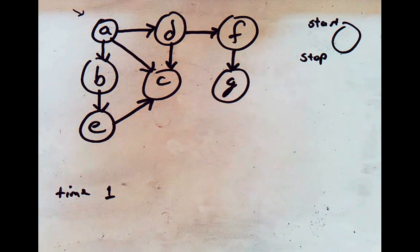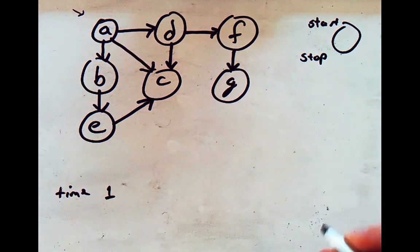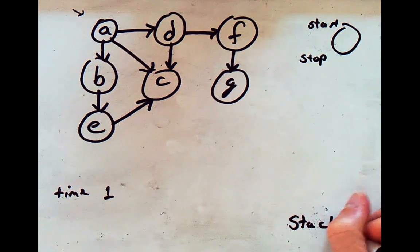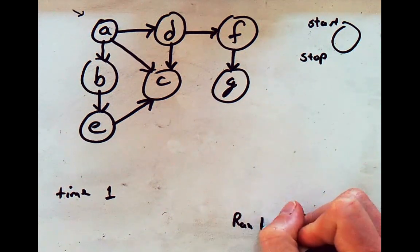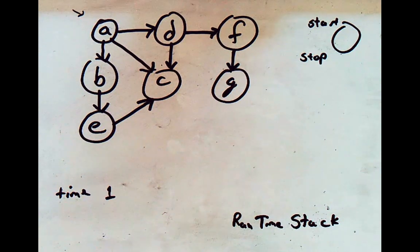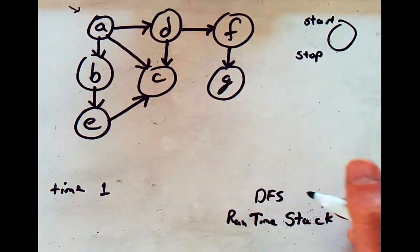Remember the basic algorithm: when I start visiting a node, I note the start time, increment the time by one, then process each of the edges checking if they've been started yet. If not, I'll go ahead and visit them as well. In our previous version of DFS, we kept track of an explicit stack. Here I'm keeping track of the runtime stack, which will be handled automatically by the programming language. We'll run DFS starting at node A.